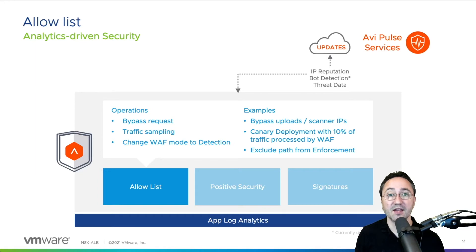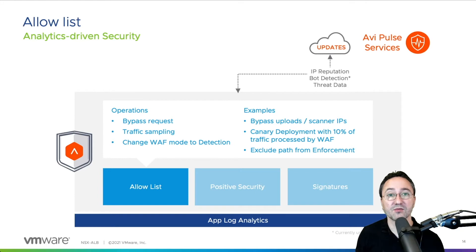Your security team might also want to run vulnerability scans on the unprotected application to find potential risks. That can be allowed with a bypass on the IP level for that scanner.